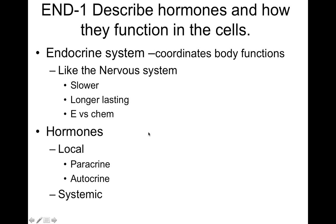The endocrine system coordinates our body functions. It's like our nervous system, except since it uses chemical messengers, it's slower because most of the stuff has to go through our blood, and it lasts longer. It's electrical versus chemical. It uses hormones, and the hormones can affect just a local area or a wider, systemic area.